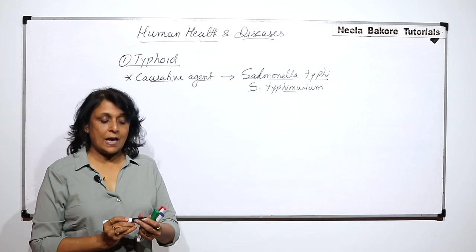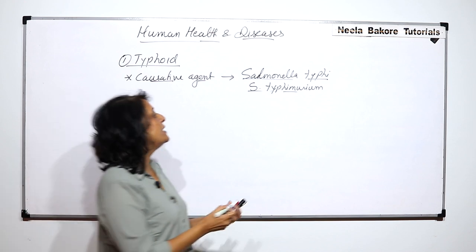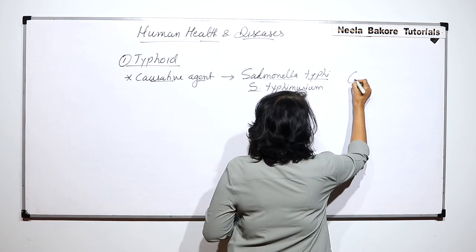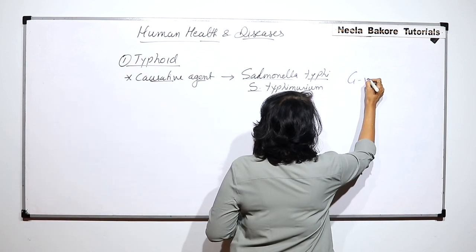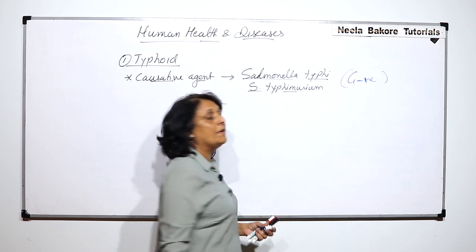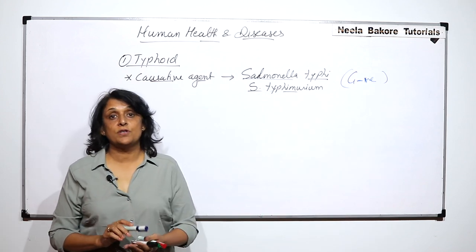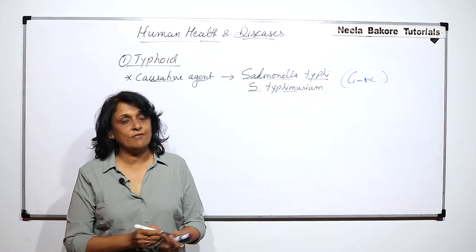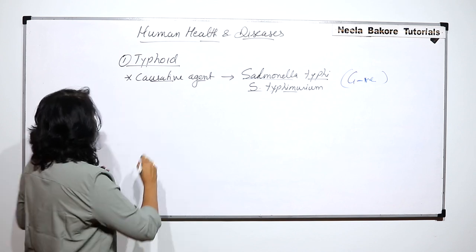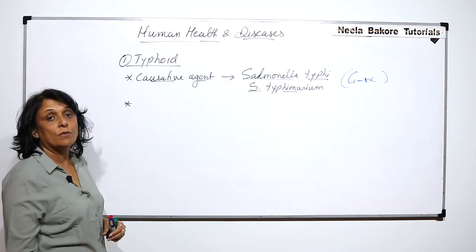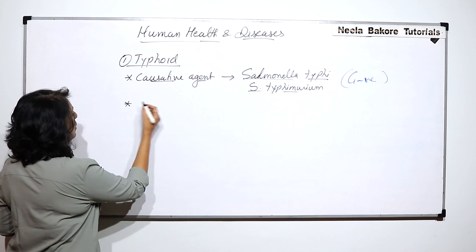This Salmonella typhi is a gram-negative bacteria. Now, how does it spread? What is its epidemiology?